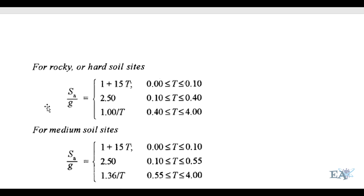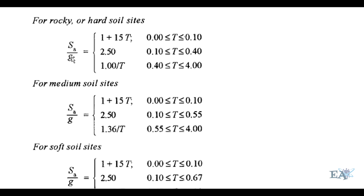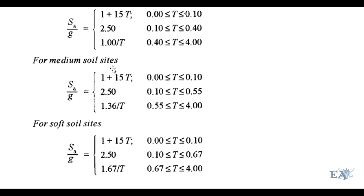Once the time period is obtained, the value of SA/g can be found using the code-prescribed formulas. For a building on rocky or hard soil: if T is between 0 to 0.10 seconds, SA/g = 1 + 15T; if T is between 0.10 to 0.40 seconds, SA/g = 2.50. The same approach applies for medium and soft soil conditions.